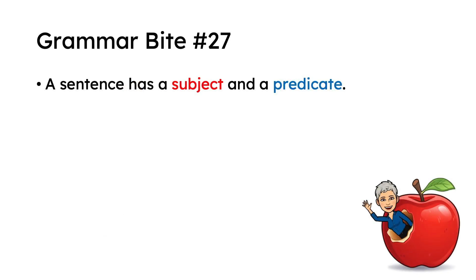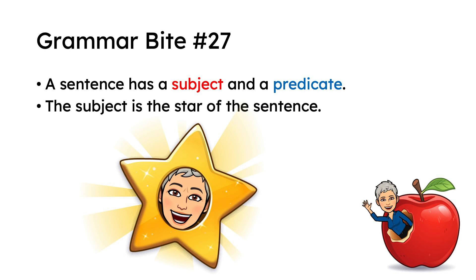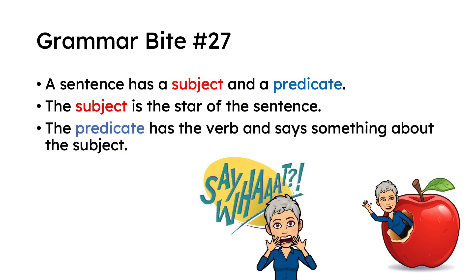Grammar Bite 27. A sentence has a subject and a predicate. The subject is the star of the sentence. The predicate contains the verb and says something about the subject.